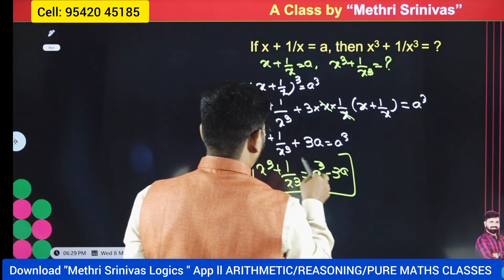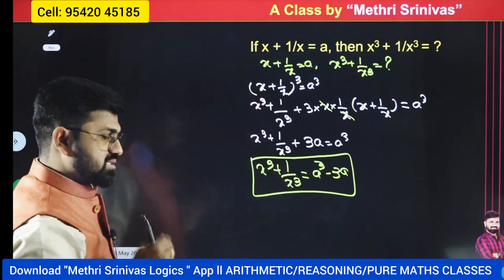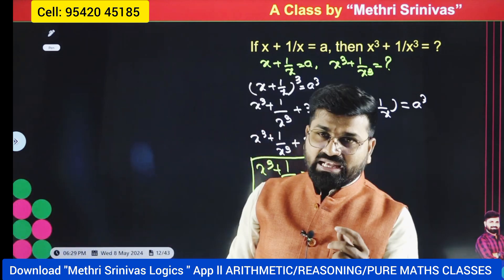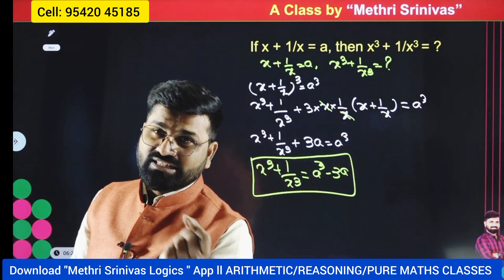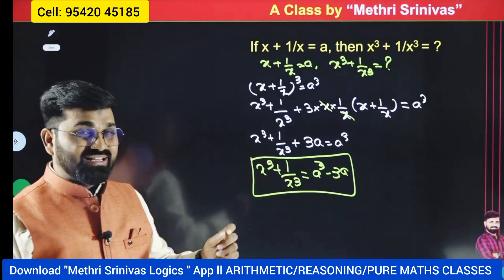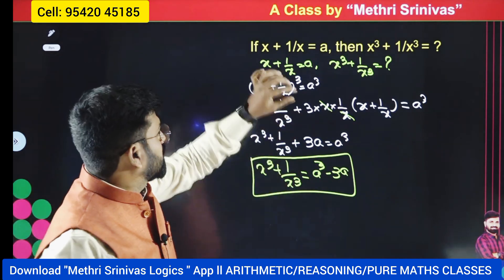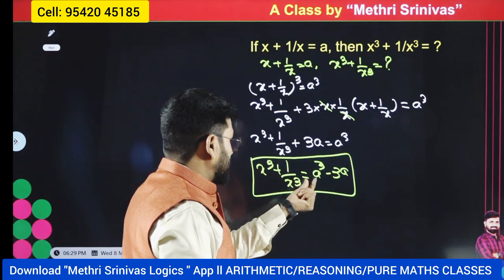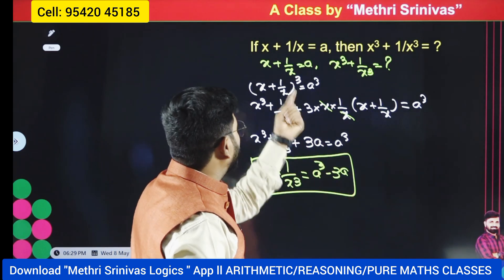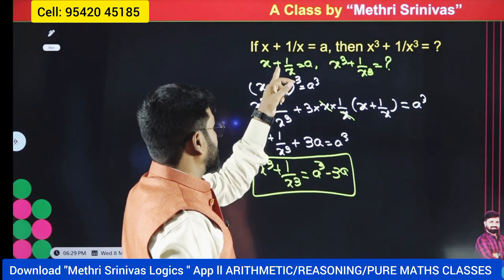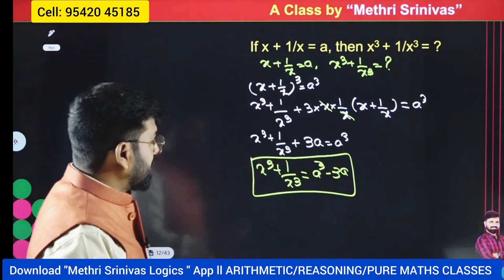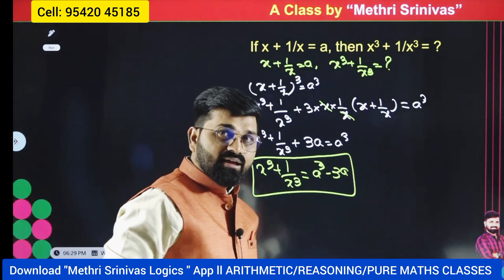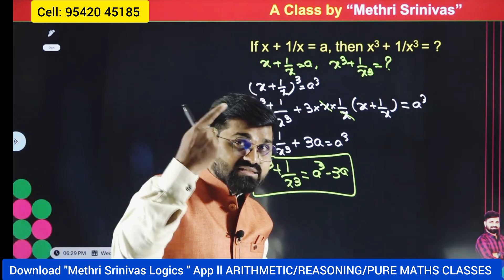So x cubed plus 1 by x cubed plus 3a equals a cubed. Therefore x cubed plus 1 by x cubed equals a cubed minus 3a. Very very important — whenever x plus 1 by x is equal to a, asking for x cubed plus 1 by x cubed, the answer is a cubed minus 3a. If it is plus here, it will be minus 3a.